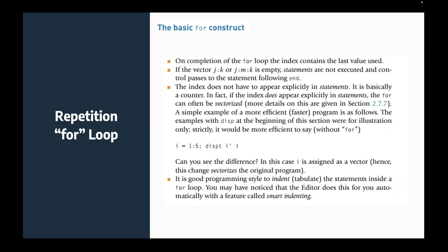We already know the basics of the for loop. When the for loop completes, the index contains the last value used. If the vector j colon k or j colon m is empty, the statement is not executed and control passes to the statement following the word end. It's always good to indent statements inside a for loop — the editor does this automatically with smart indenting.